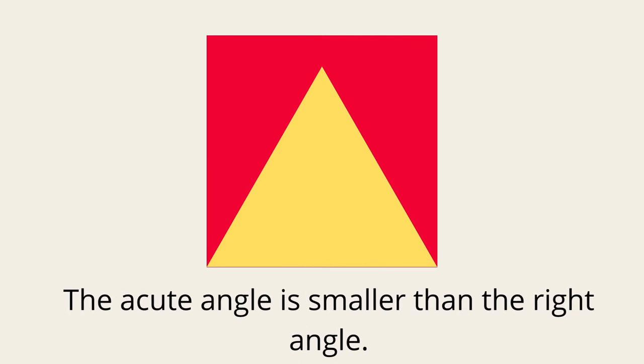Look at this diagram. We have a square and a triangle. A square has four right angles. As you can see here, the acute angle in the triangle is smaller than the right angle.